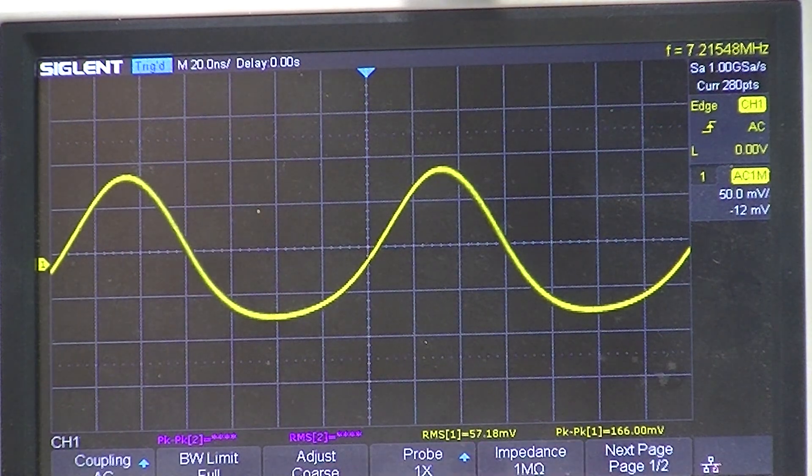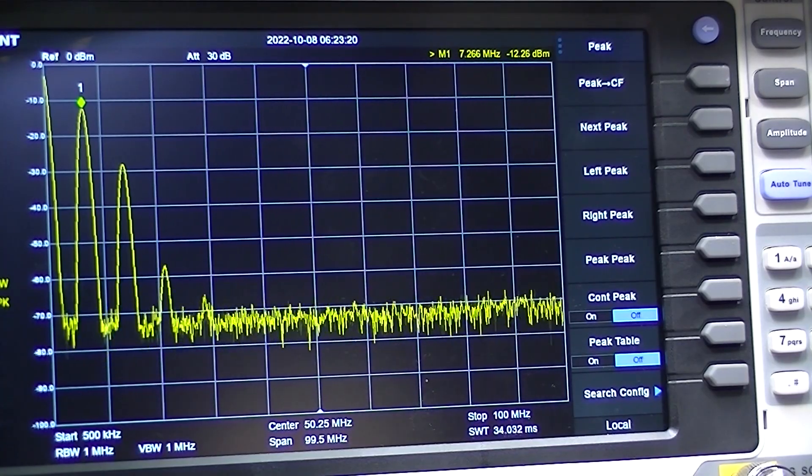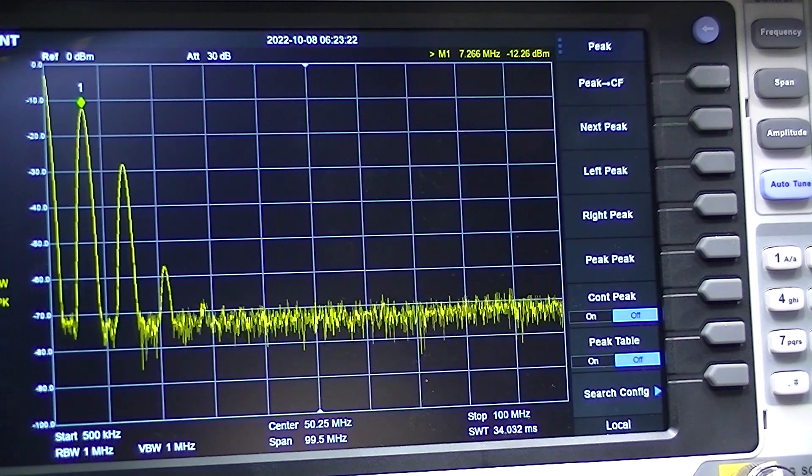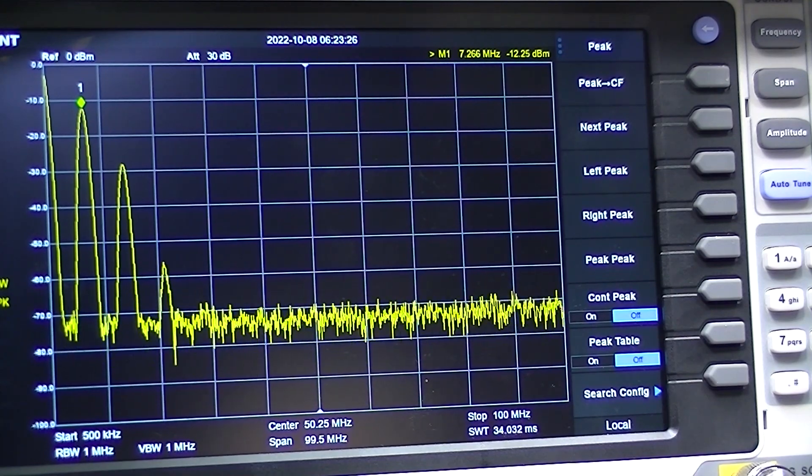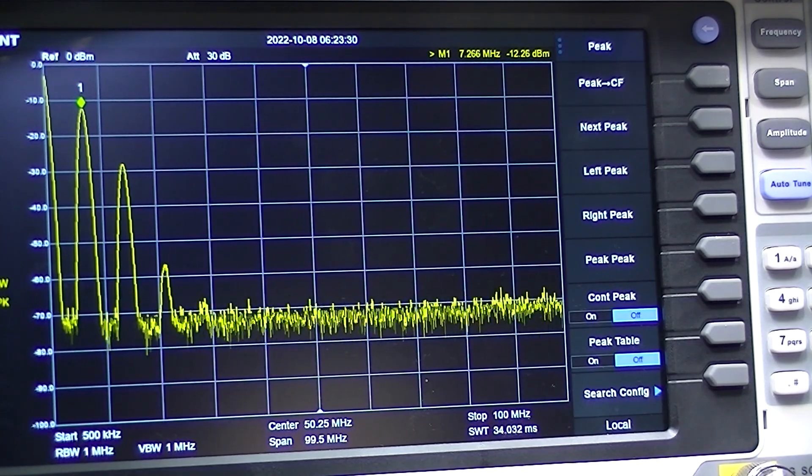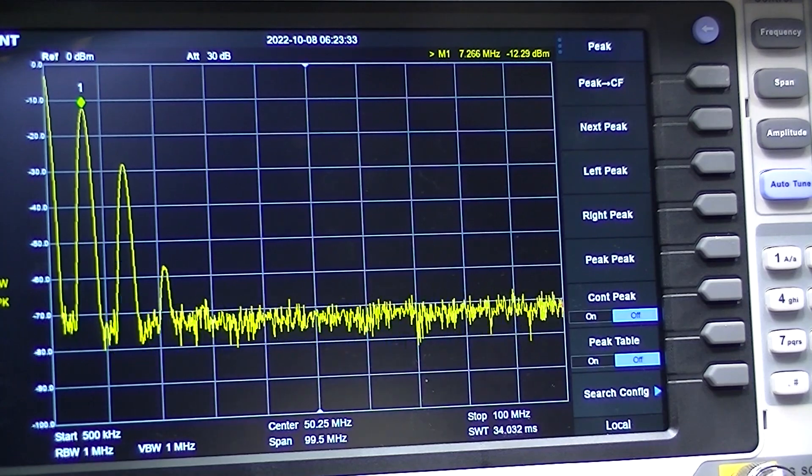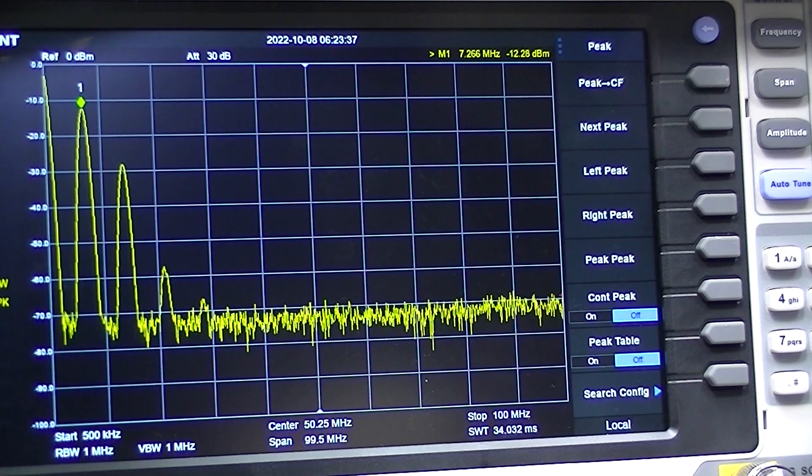And to the spectrum analyzer. I have marker number one set to the peak which is 7.2 megahertz and minus 12 dB. Now this signal generator does not need a 50 ohm load.